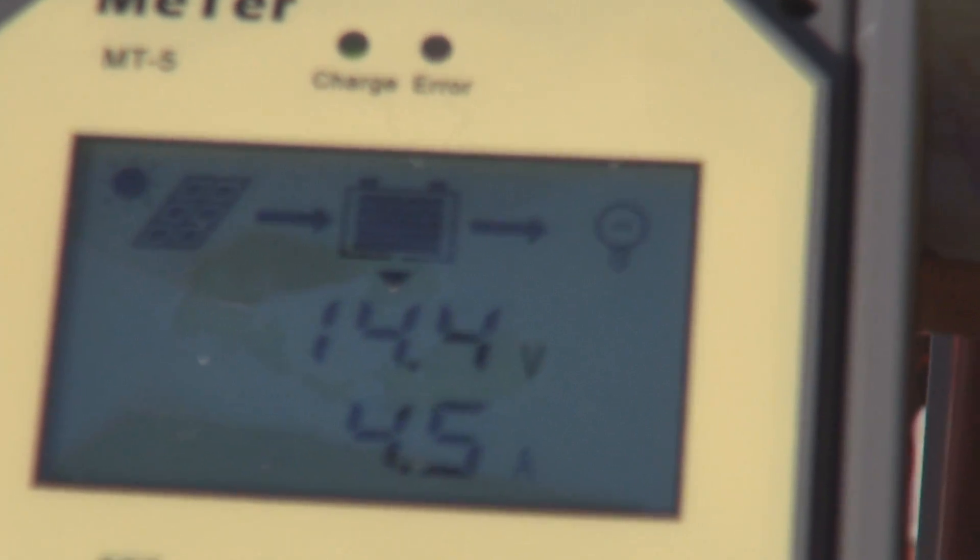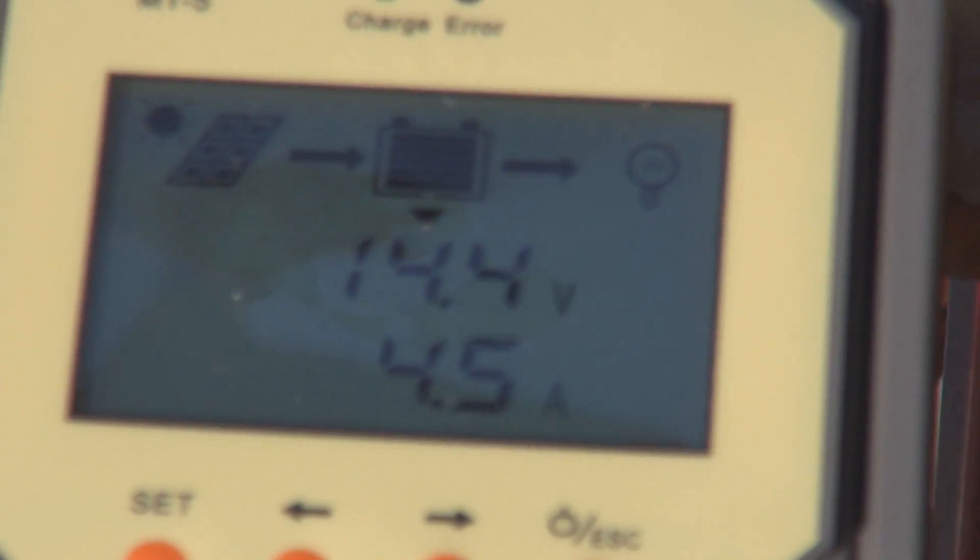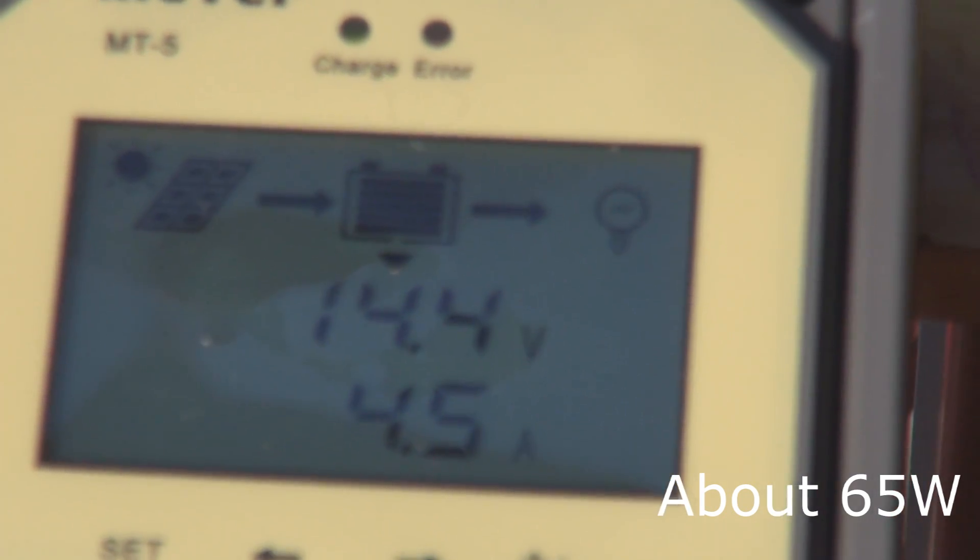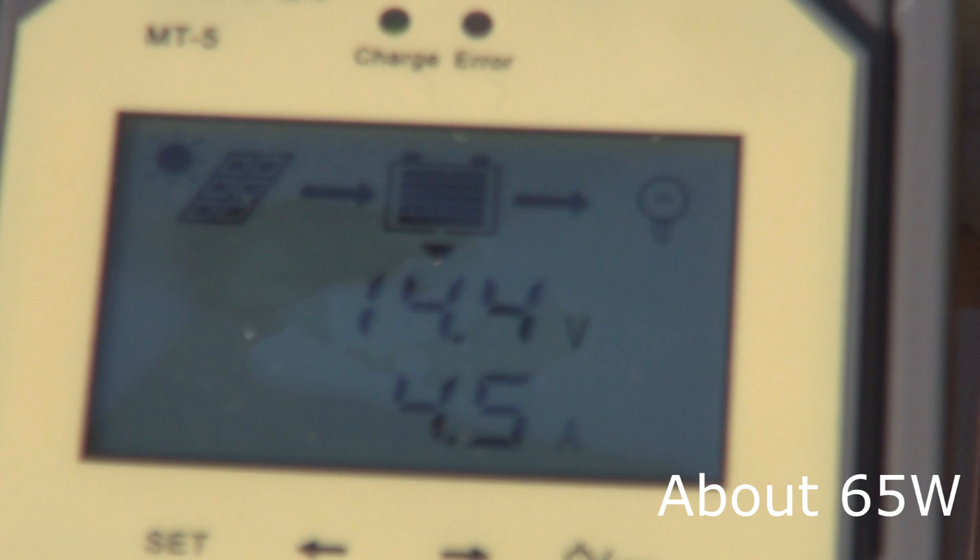For this time of day—about 4:30 in the afternoon—it's putting out 14.4 volts times 4.5 amps. That's the wattage it's producing, and that's about as good as we're going to get today.